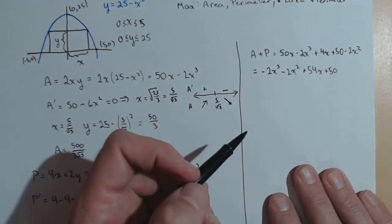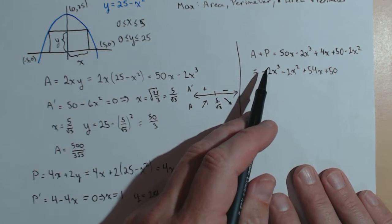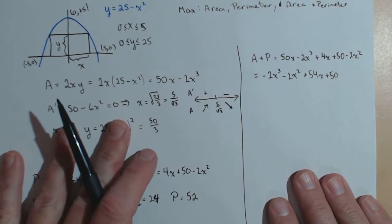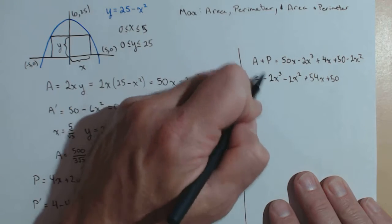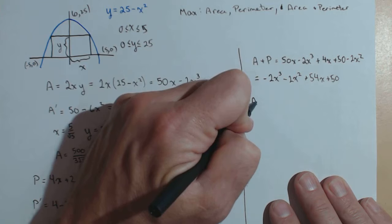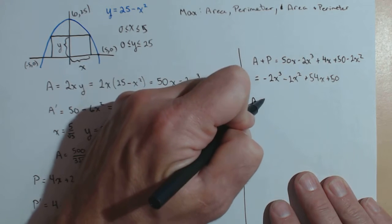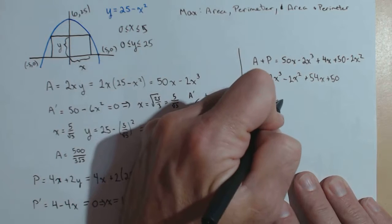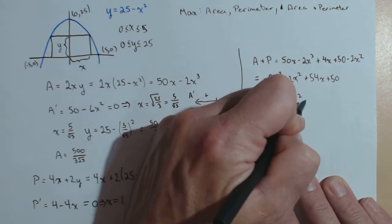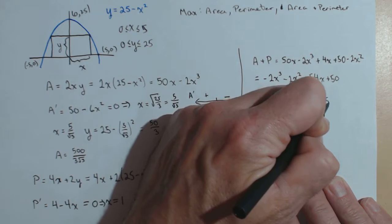Again, this sum will be 0 when x is 5 or 0. So we're looking for some point in between there that's going to maximize it. So taking a plus p prime, we'll call it, is going to give us minus 6x squared minus 4x plus 54.